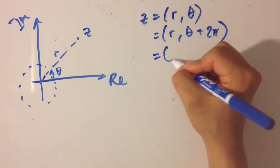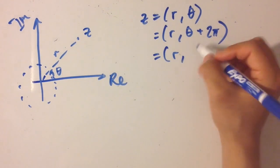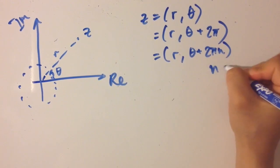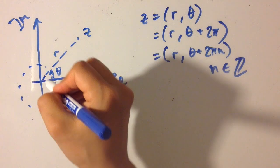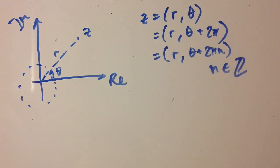So we can generalize it and say that z is equal to theta plus 2 pi n where n belongs to the integers. So I can go into the negative direction and go to the positive. So if we rotate clockwise and counterclockwise by 2 pi we'll just come back to the same point.